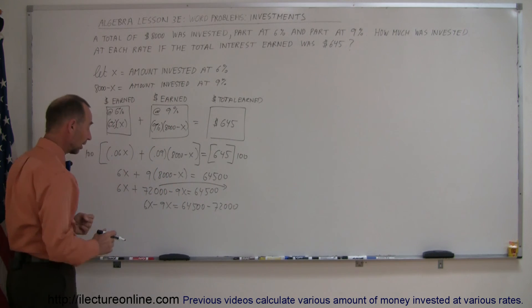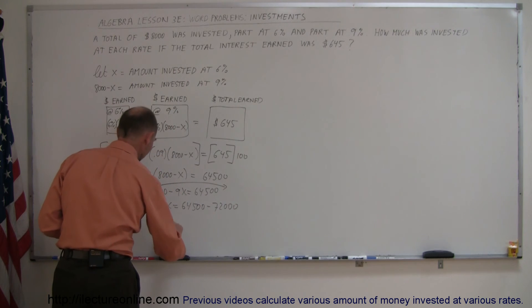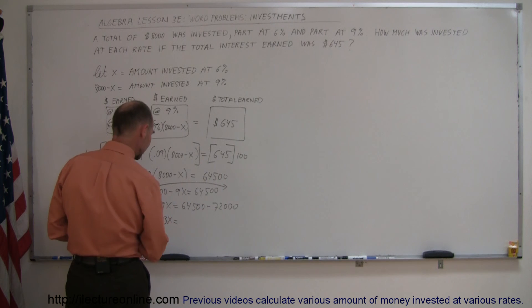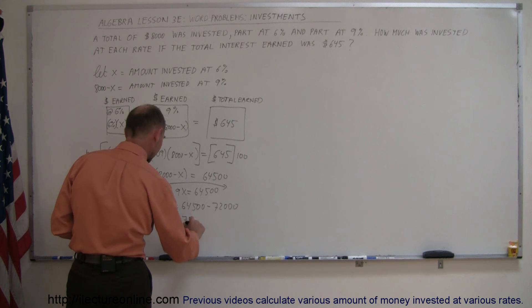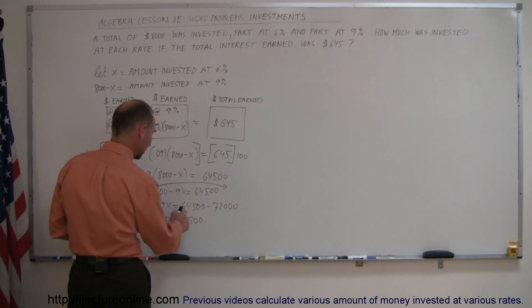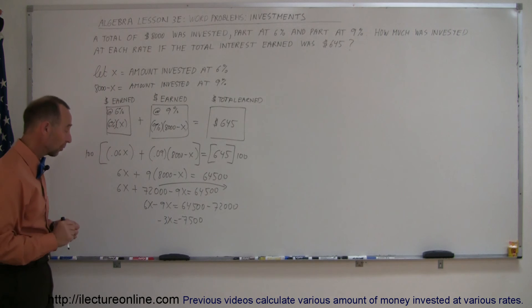Then when we combine like terms, on the left side we get a minus 3X. On the right side, we get, let's see here, that would be negative 7,500. If we add this to this, we get exactly 72,000, so that is correct.